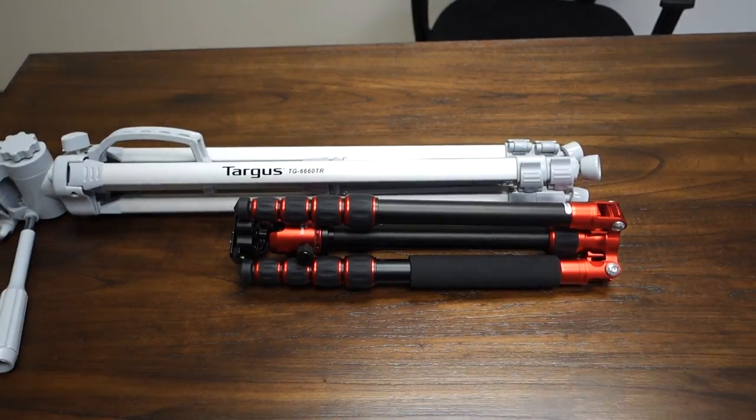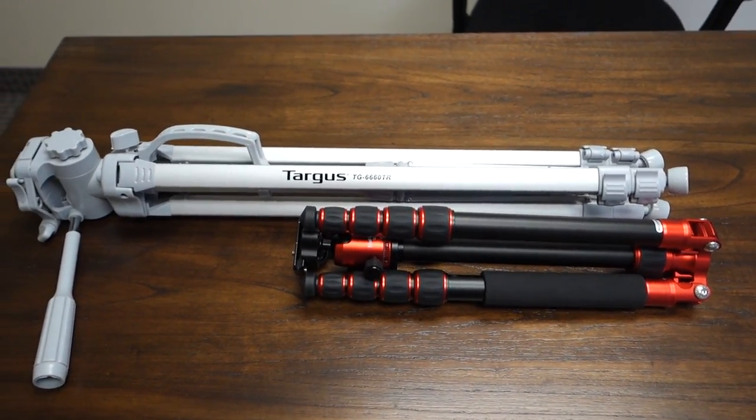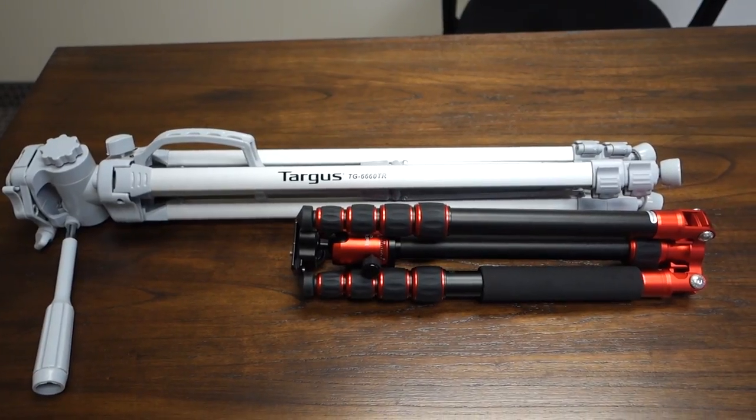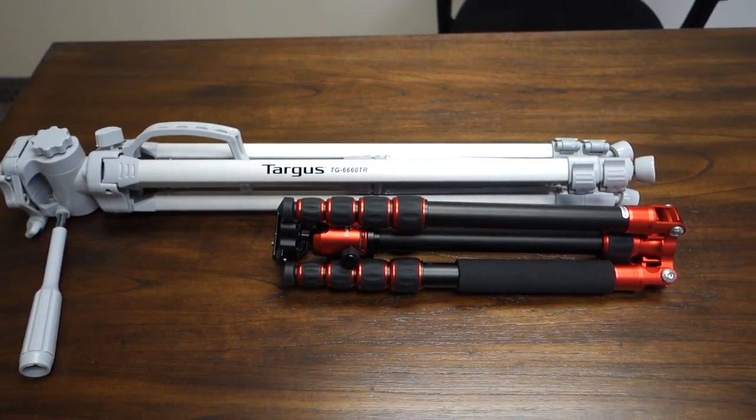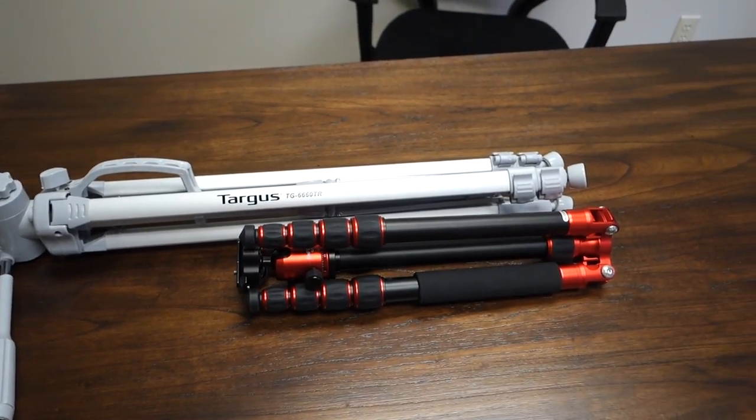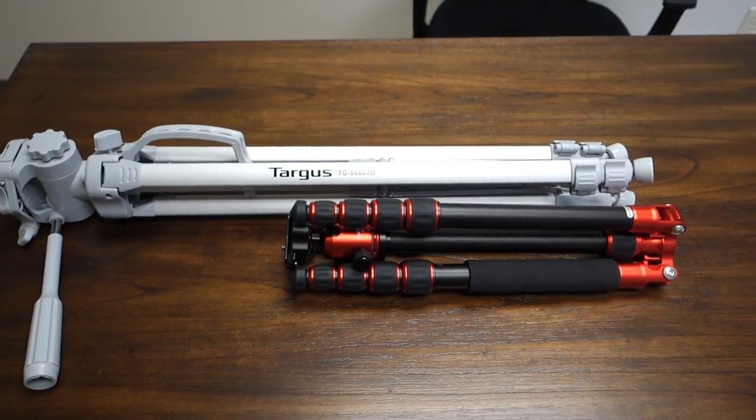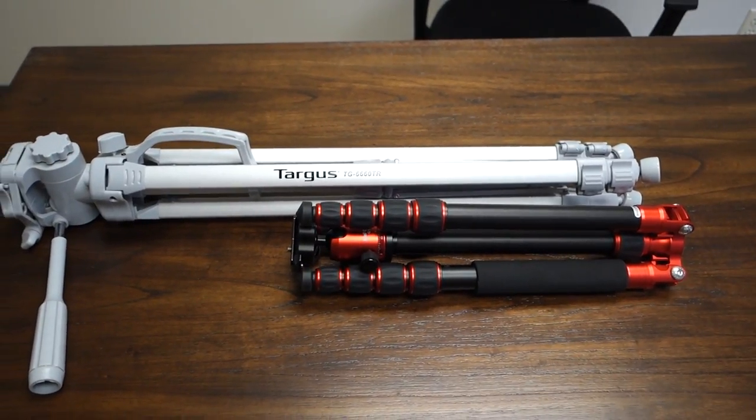But look how small that MeFoto folds up to. That's just absolutely amazing. That is what you want whenever you're carrying something like a backpack and you want a tripod, you slip that sucker on the side and you got plenty of room. That's nice.